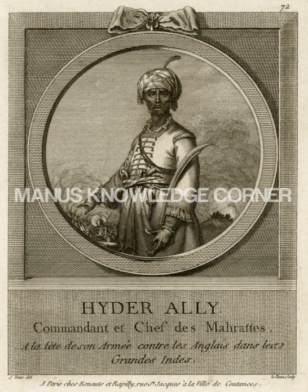The Mysorean rockets used by Tipu Sultan during the Battle of Palalar were much more advanced than any the British East India Company had previously seen, chiefly because of the use of iron tubes for holding the propellant. This enabled higher thrust and a longer range for the missile. After Tipu Sultan's eventual defeat in the Fourth Anglo-Mysore War and the capture of a number of Mysorean iron rockets, they were influential in British rocket development, inspiring the Congreve rocket, which was soon put into use in the Napoleonic Wars.